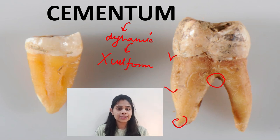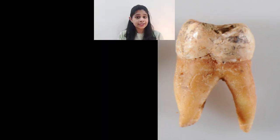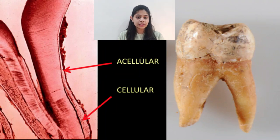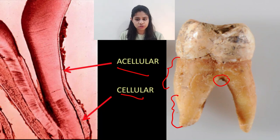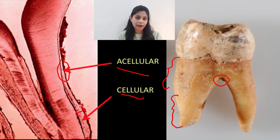Broadly, cementum can be categorized into two components. We have the acellular cementum, which is usually present in the cervical one third of the tooth, and then we have the cellular cementum, which is restricted to the apical end of the root as well as in the furcation area. Acellular cementum is thin in the coronal aspect, whereas cellular cementum is quite thick and restricted to the apical ends.